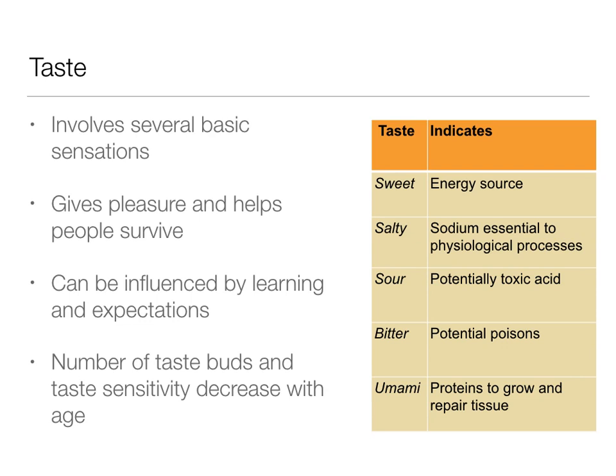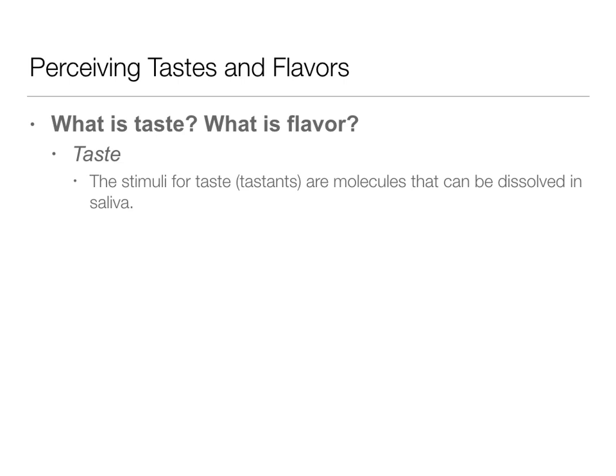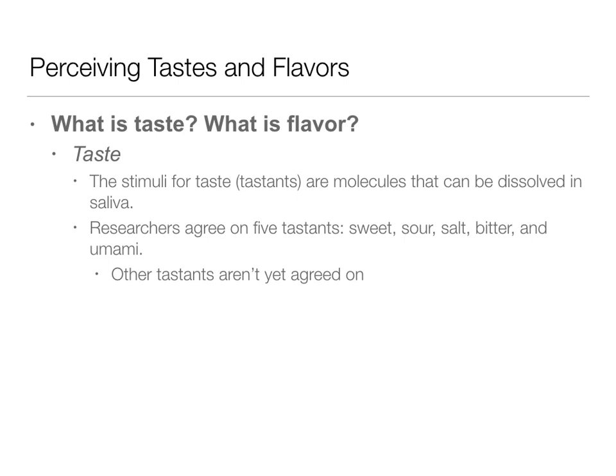Let's make the distinction between taste and flavor. Taste really is the stimuli — going bottom-up. The stimuli for taste, called tastants, are molecules that can be dissolved in saliva. We agree that there are five: sweet, sour, salty, bitter, and umami. There is tons of research and debate about more tastants besides those — umami has been added since I was a kid, and there will probably be more added as well. These are the bottom-up piece.